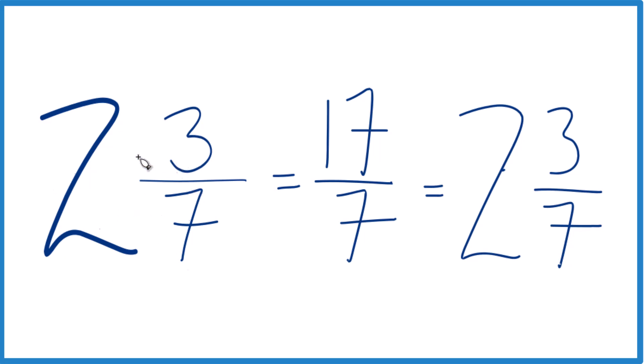So the mixed number 2 and 3 sevenths equals the improper fraction 17 sevenths. And these two numbers are equivalent. They're equal. They have the same value. They're just different representations.